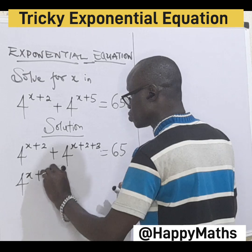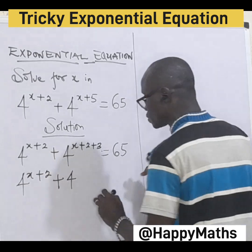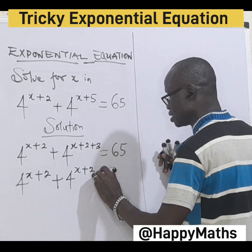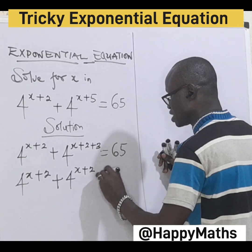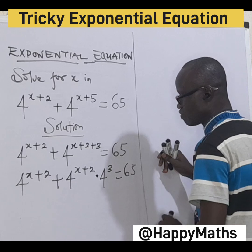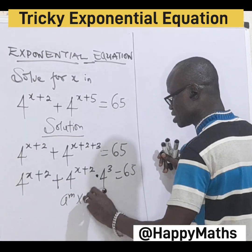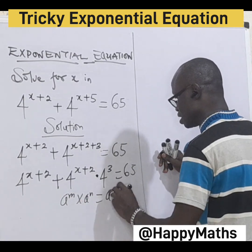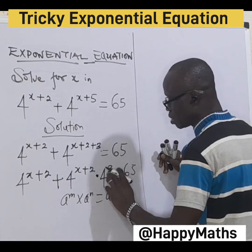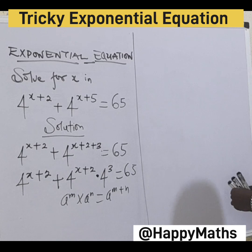This is 4s plus 2, then 4s plus 2 times 4s plus 3 equal to 65. Note that a^n times a^n is simply a^(n plus n), meaning 3 plus 2 gives you 5 back.